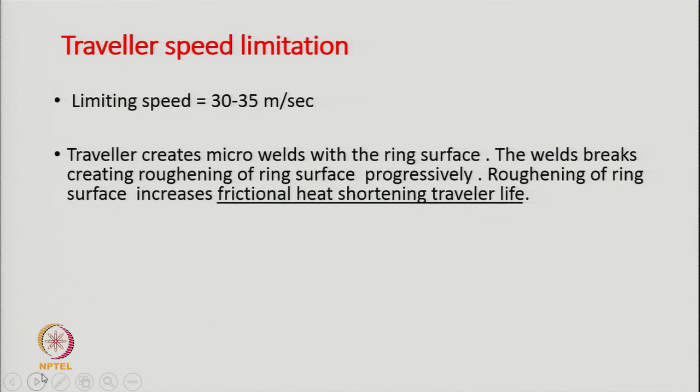Some companies may claim that it can go up to 40 meters per second, but generally at the commercial level the speed that is kept is around 30 to 32 meters per second — that is the typical speed of the traveler, the surface speed. What happens is the traveler creates micro welds with the ring surface as it turns — there is metal-to-metal friction. The welds break, creating roughing of the ring surface. Roughing of the ring surface increases frictional heat and therefore the traveler becomes very hot, which changes the surface characteristics of the traveler. As a result, the traveler life shortens.